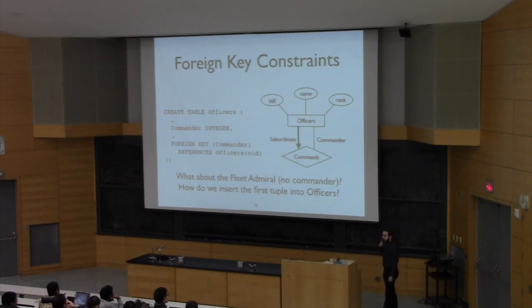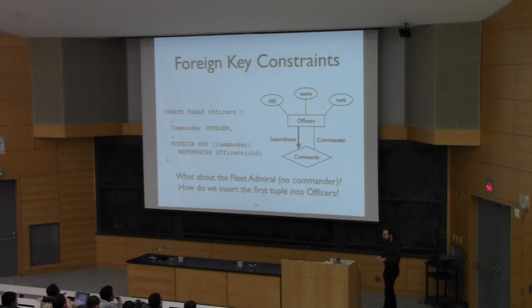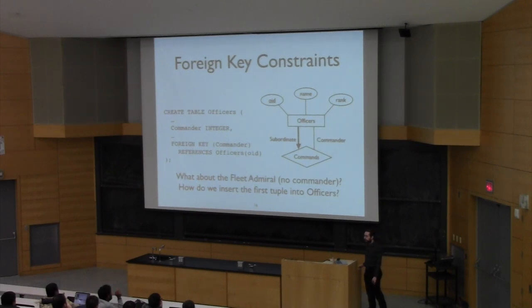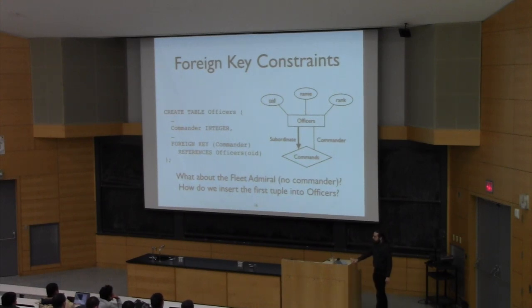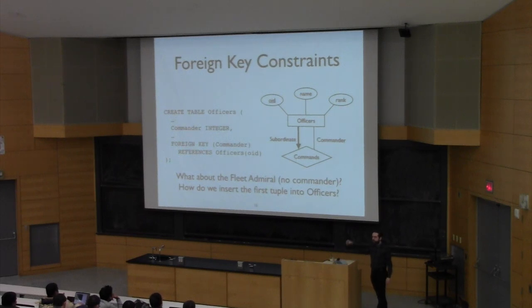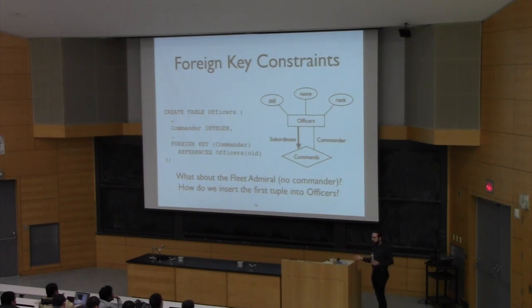How do we represent the top of the hierarchy — the fleet admiral who has no commanding officer? If there's nothing to point to, you point to null. Same thing for inserting the first tuple into officers — commander would be null. You can think of commander as a pointer; if you're at the top of the hierarchy and there's nothing to point to, you point to null.